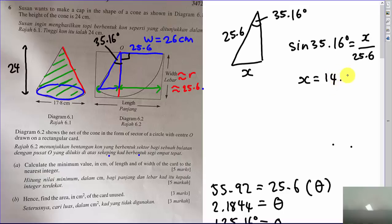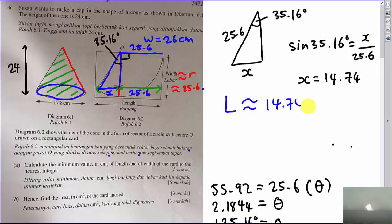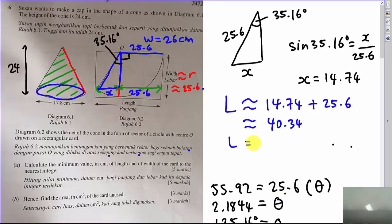Solving: x = 25.6 × sin(35.16°) = 14.74. So the length is very close to 25.6 + 14.74 = 40.34. Since you cannot round down to 40 (there wouldn't be enough space), the minimum length is 41 cm.